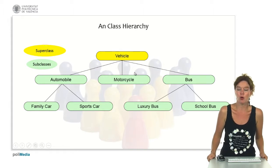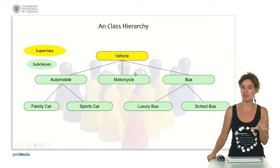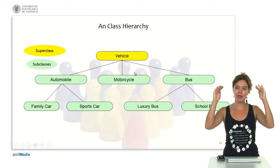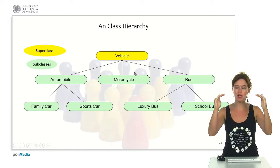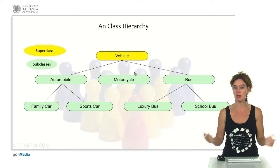It can be a family car or it can be a sports car or a bus. For example, it can be a bus that is used to go to school or it's a luxury bus. So we can create hierarchies of classes that are getting more concrete while we go down the hierarchy.